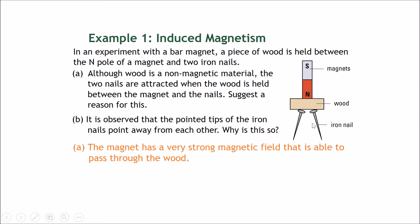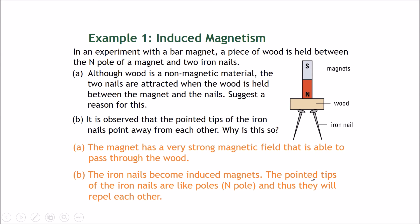It's observed that the pointed tips of the iron nails point away from each other. Why is this so? This question was asked earlier in the presentation, so now let's answer it. The iron nails become induced magnets.